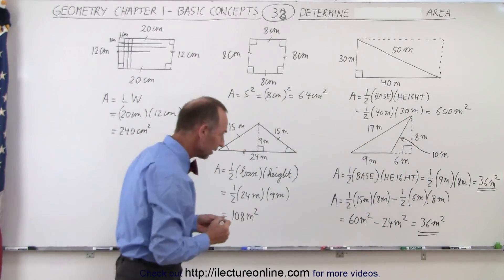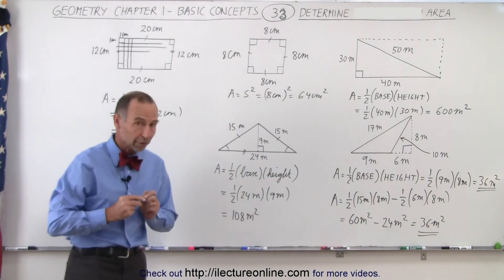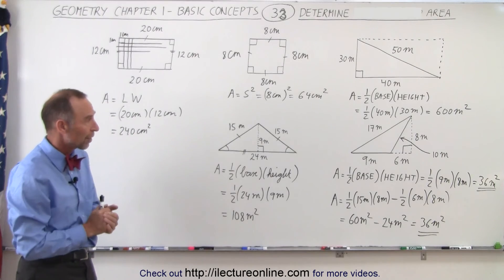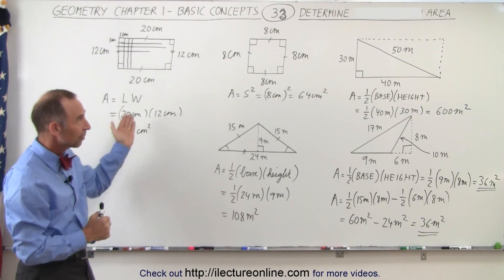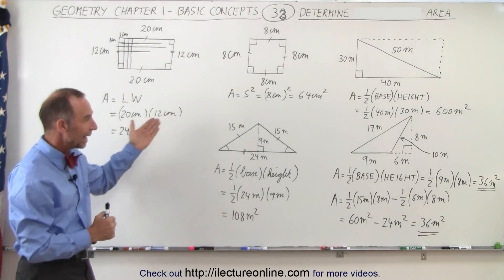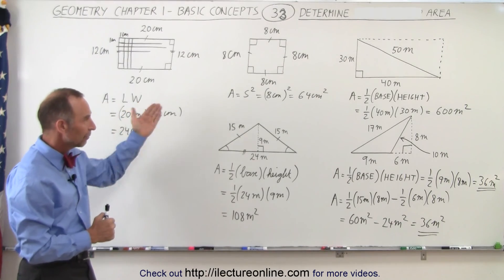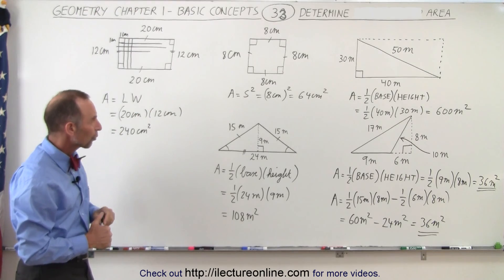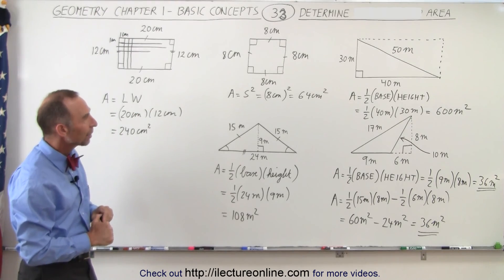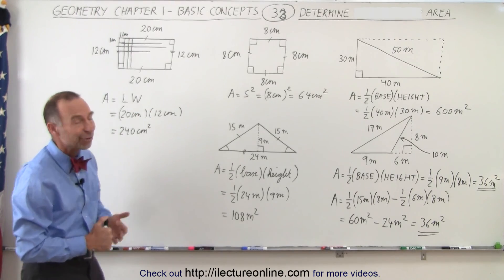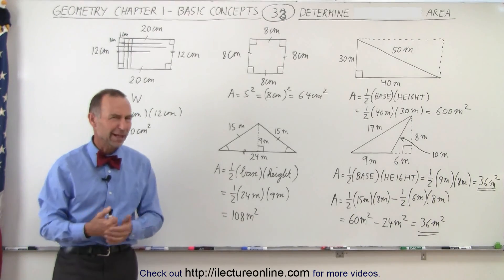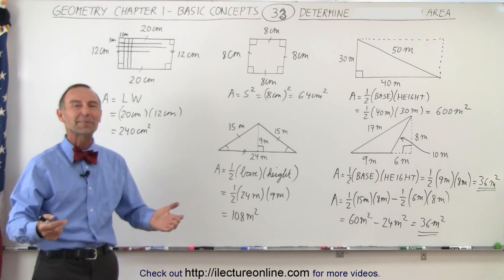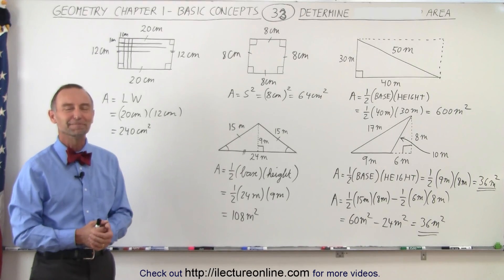So you can see that formula works no matter what the shape of your triangle is. And that's how we find the perimeter and the area of these various quadrilaterals and triangles. Quadrilaterals is kind of a mouthful, isn't it? That's how it's done.